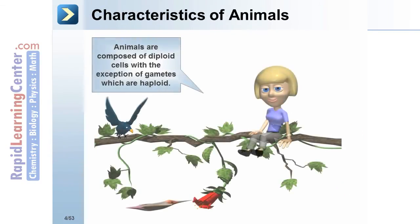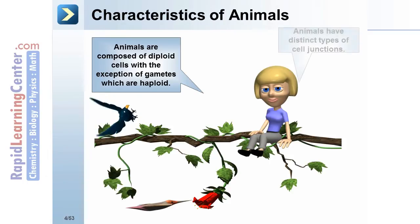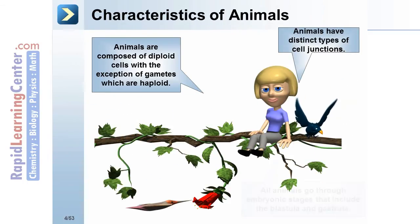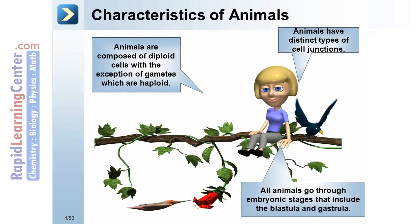Characteristics of animals. Animals are composed of diploid cells, with the exception of gametes, which are haploid. Animals have distinct types of cell junctions. All animals go through embryonic stages that include the blastula and gastrula.